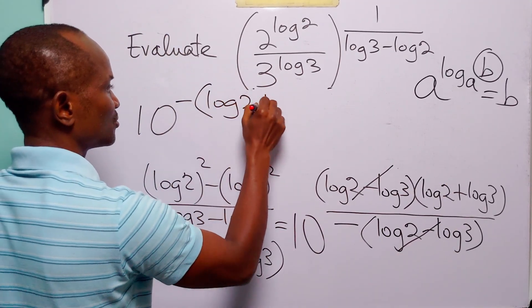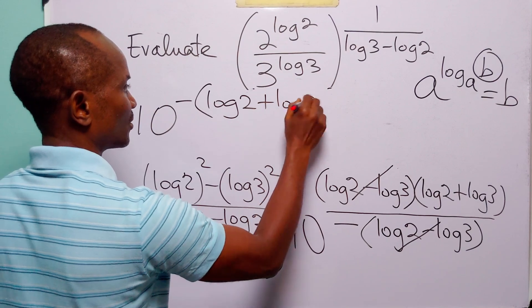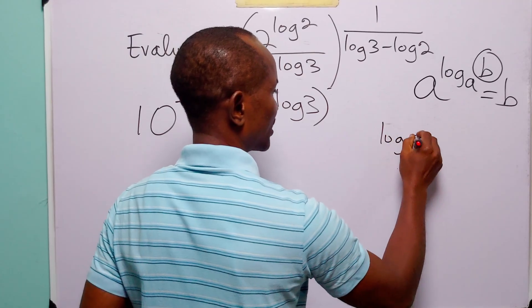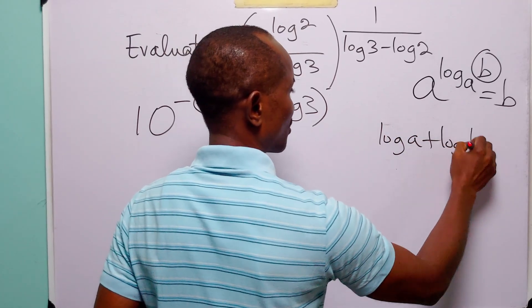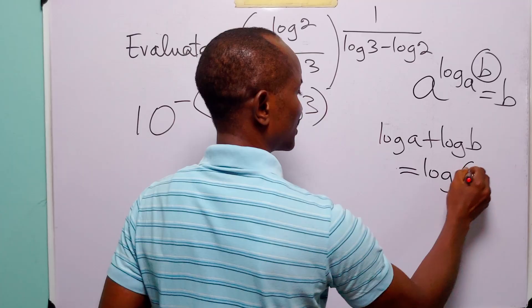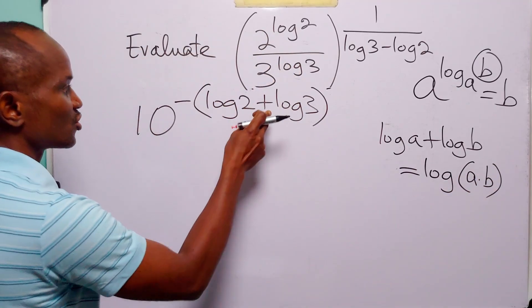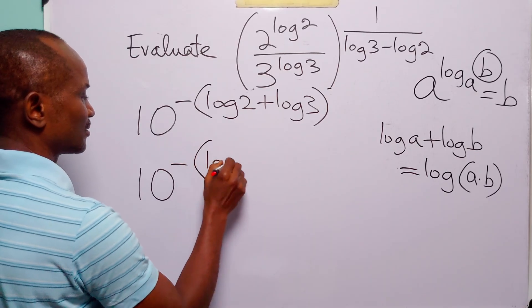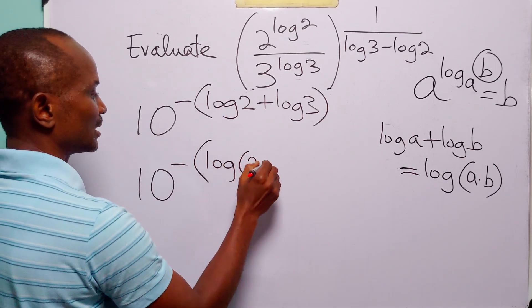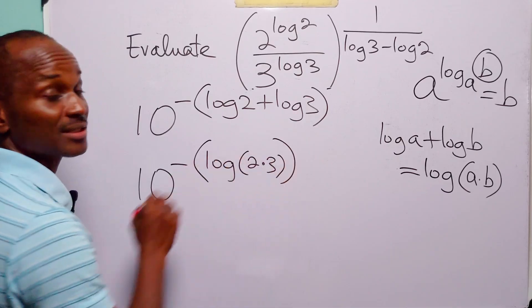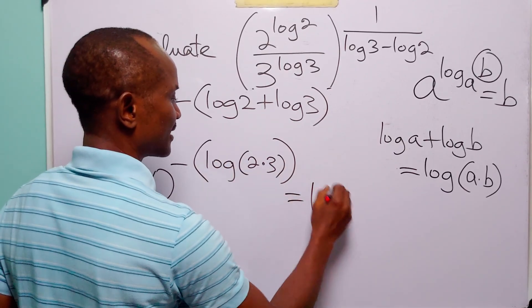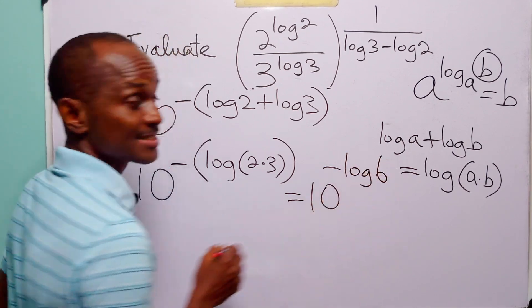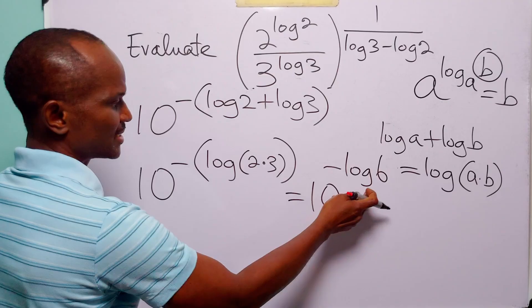Let us remember that log a plus log b equals log (a times b). So this is the same thing as 10 to the power minus log (2 times 3), which of course equals 10 to the power minus log 6.